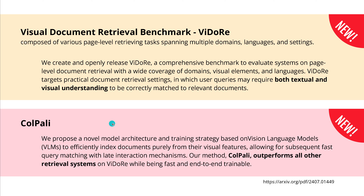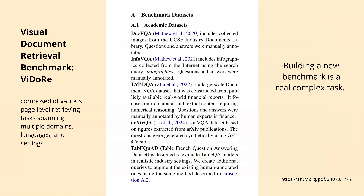The authors propose a novel model architecture and a new training strategy based on vision language model to efficiently index the documents purely from the visual features. And this ColPali, if done right, outperforms all other retrieval systems. This is something special that beats everything we have from Spreadsheet LLM because now we integrate vision in the understanding.